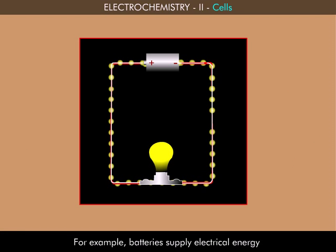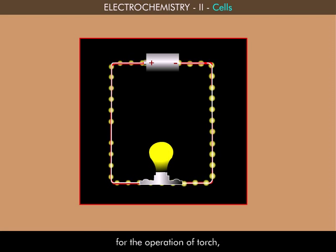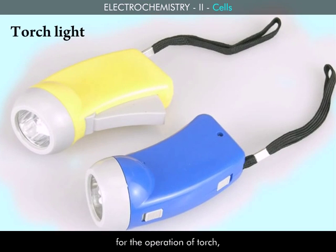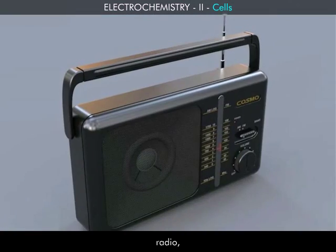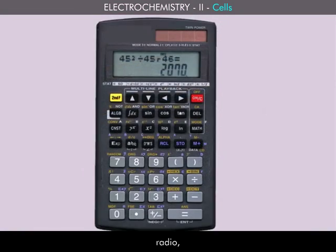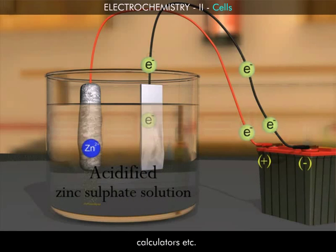For example, batteries supply electrical energy stored in the form of chemical energy for the operation of torch, radio, calculators, etc. Conversely,